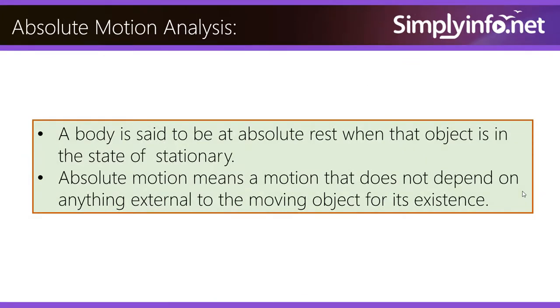A body is said to be at absolute rest when that object is in the state of stationary. Absolute motion means a motion that does not depend on anything external to the moving object for its existence.